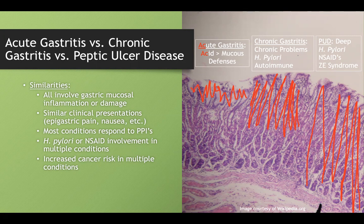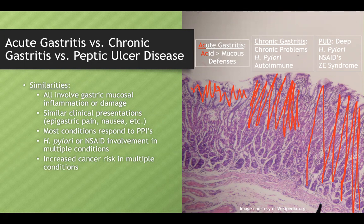If PUD is going through everything, you can reach the blood vessels and cause bleeding. If you go through everything, you can cause a perforation. So PUD is deep. This is just a tangent I like to go on because I think it's a good way to structure these three diseases.